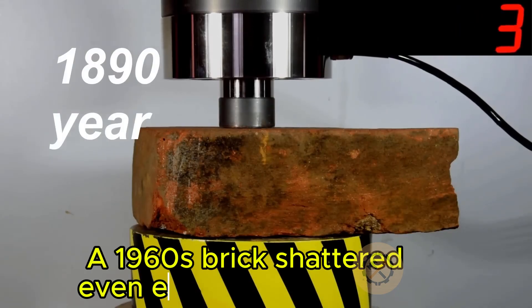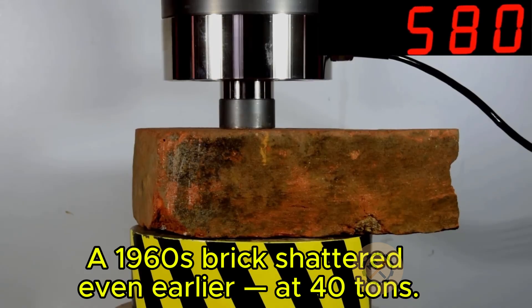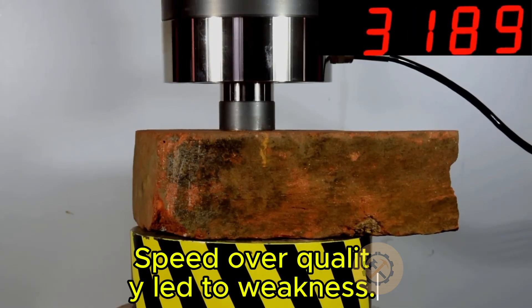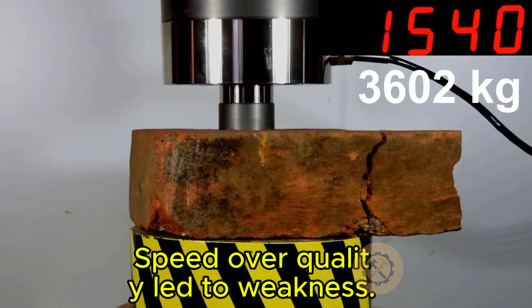Historical bricks often used locally sourced materials and slower production methods, which allowed for a denser final product. The slower the process, the better the internal bond.